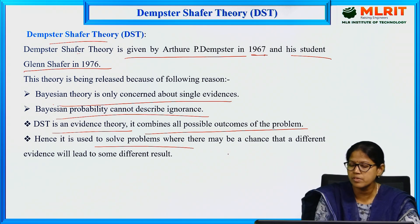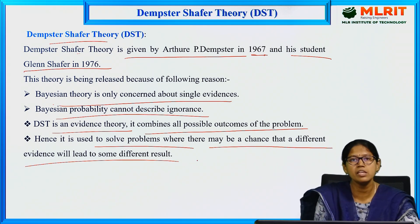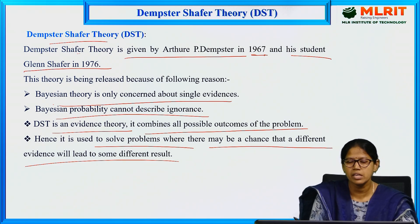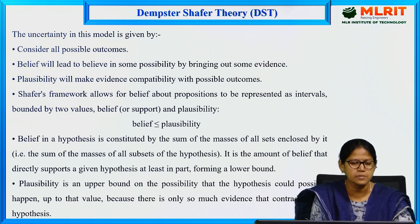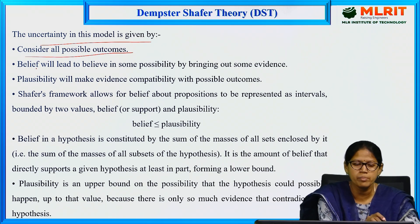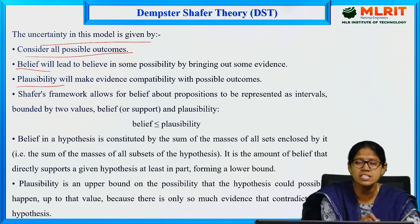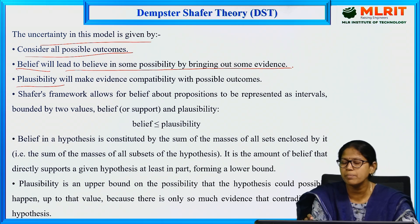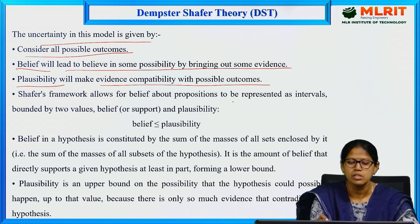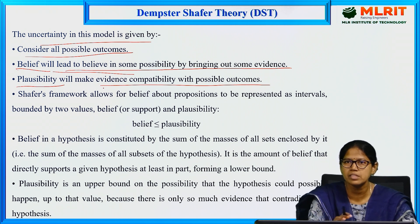Hence, it is easy to solve problems where different evidences may lead to different results. One evidence will lead to one result, another evidence will lead to another result — it combines all those evidences based upon all possible evidences. The uncertainty in this model is given by two components: belief and plausibility. Belief leads to a possibility by bringing out some evidence, and plausibility makes evidence compatible with the possible outcomes.